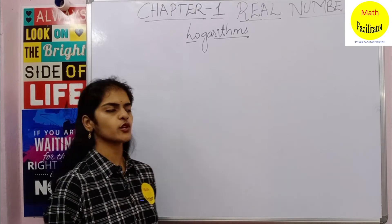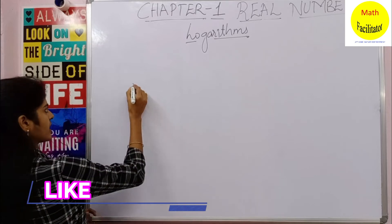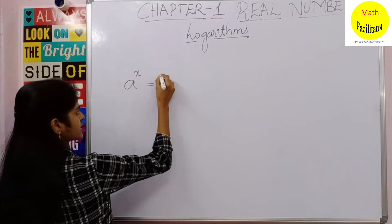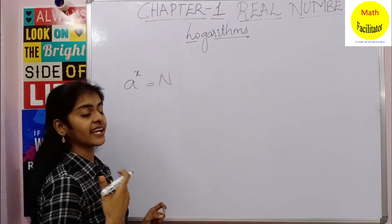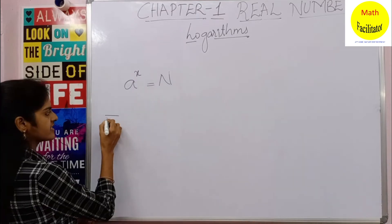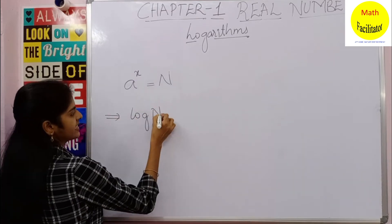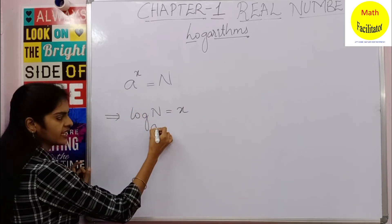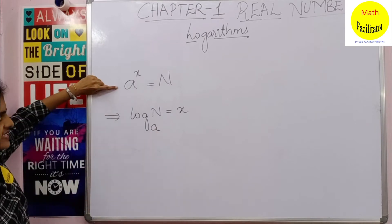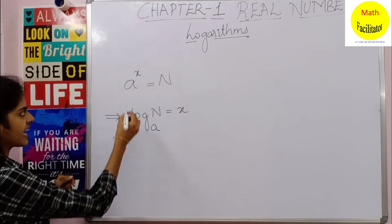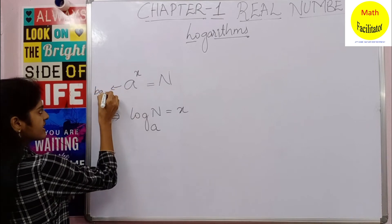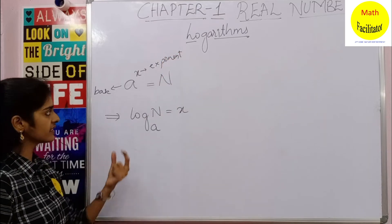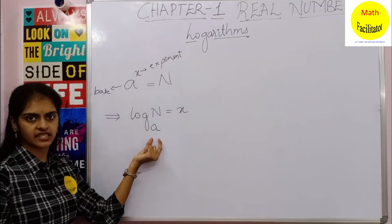You have already learned about exponents. Exponents are of the form a power x. Now if I equate this exponent to n, the same thing can be represented in logarithmic form. This is written as: log n is equal to x, to the base a. You read it as: a power x is equal to n, where a is the base and x is the exponent.